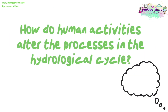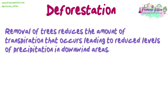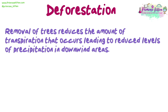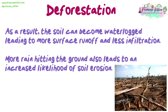For the final part of our video, we are going to look at how human activities alter the processes in the hydrological cycle. Remember that naturally these processes would exist in a state of dynamic equilibrium, so the amount of water entering via the inputs would be equal to the amount leaving through the outputs. Human activity alters the rate of transfer between reservoirs, as well as the volume of water in each reservoir, therefore upsetting this balance. The first human activity we will look at is deforestation. Removal of trees reduces the amount of transpiration that occurs, leading to reduced levels of precipitation in downwind areas, which could lead to droughts and difficulty growing crops. Furthermore, removing the trees removes the canopy, so the amount of interception is reduced, meaning more rain hits the ground. As a result, the soil can become waterlogged, leading to more surface runoff, less infiltration, and an increased likelihood of soil erosion.